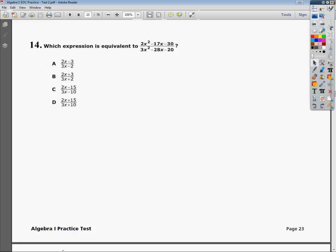Now, the first thing I need to do is factor out any common factors from the top or the bottom. 2 doesn't go into 17, 3 doesn't go into 28, so there's no common factors. So I'm going to factor them out using slide and divide. I'm going to do the top part first, so I've got 2x squared minus 17x minus 30.